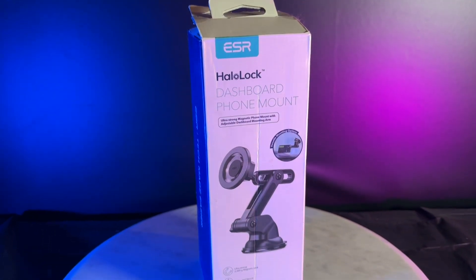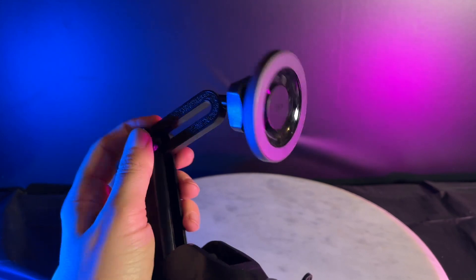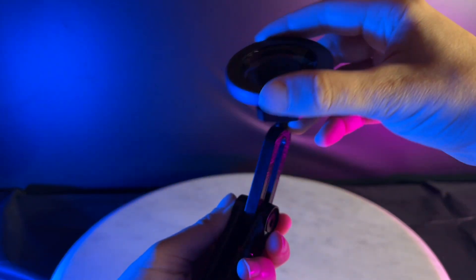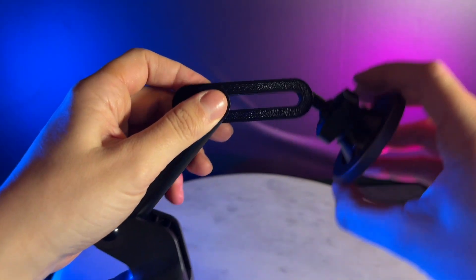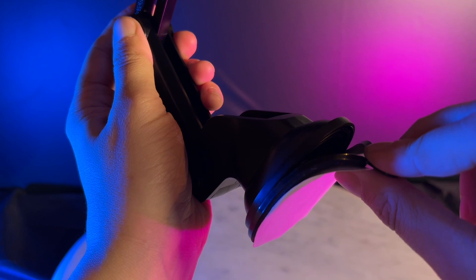ESR Halo Lock dashboard phone mount. This is a secure mount that you can magnetically attach to your phone. Very strong, and you'll want to place this sticky suction end onto your dash or anywhere around your car.